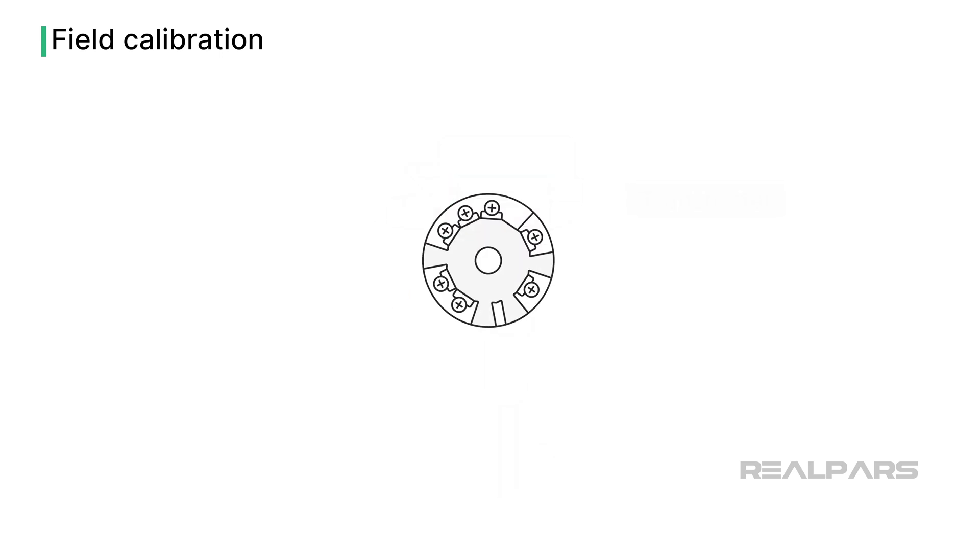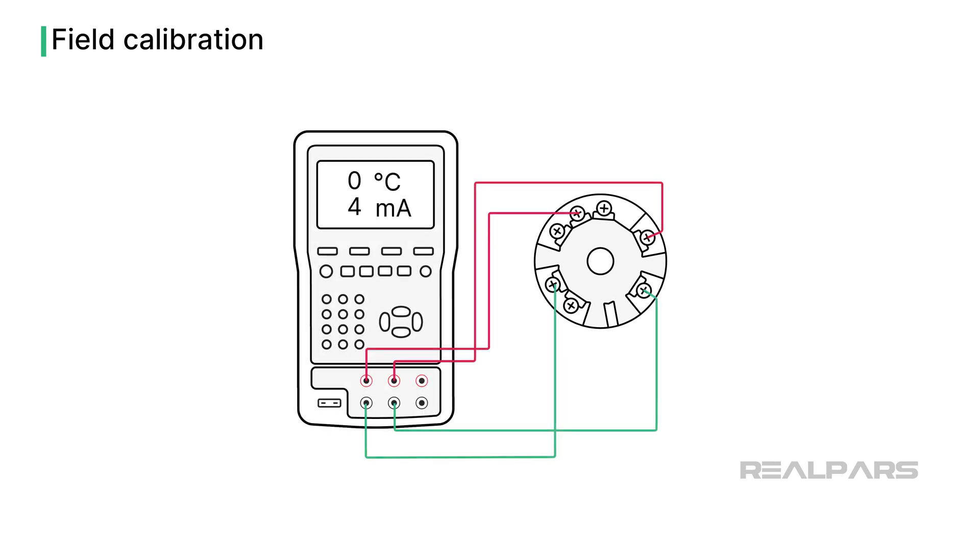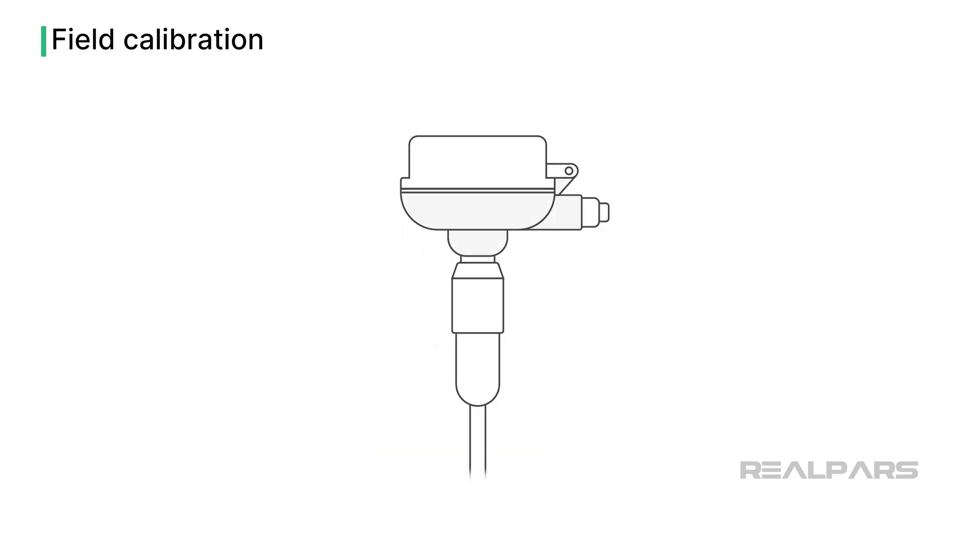Stepping back, we had previously calibrated and adjusted the transmitter, assuming that the process calibrator exactly simulated the RTD characteristics across the entire input range. That exact simulation may not be the case, as the sensor has unique characteristics.